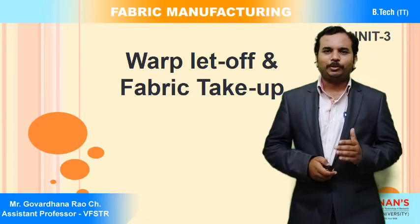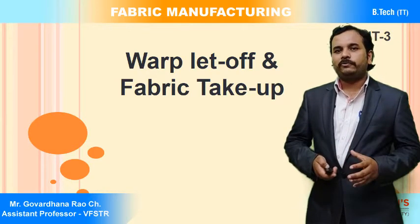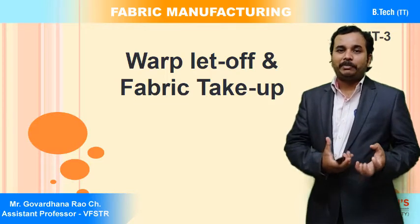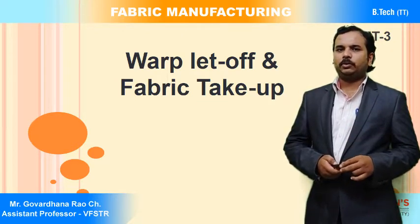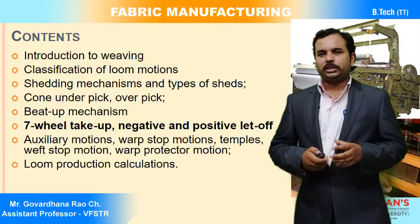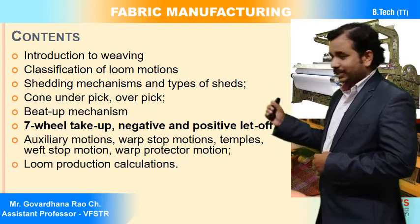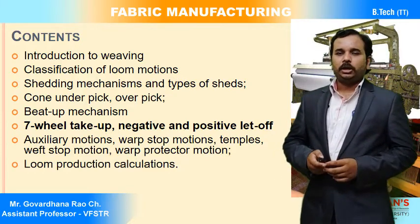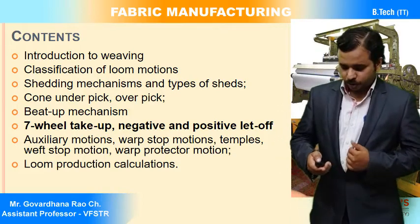The secondary motions are warp let off and fabric take up. Warp let off means warp is being delivered or unwound from the warp beam, and fabric take up is the mechanism that takes up the already-formed fabric. Today's topics include the seven-wheel take-up motion and negative and positive let off motions. In the next sessions we will discuss auxiliary motions and loom production calculations.